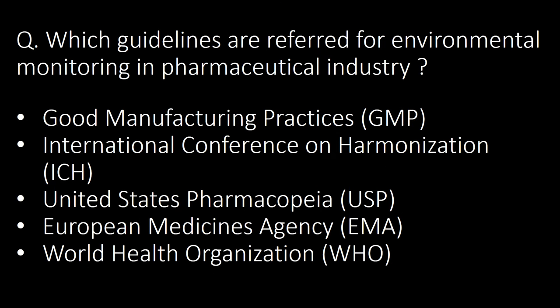Which guidelines are referred to for environmental monitoring in the pharmaceutical industry? Here are five important guidelines: first is Good Manufacturing Practices (GMP), second is ICH guidelines, third is USP guidelines, fourth is EMA (European Medicines Agency) guidelines, and fifth is WHO (World Health Organization) guidelines.